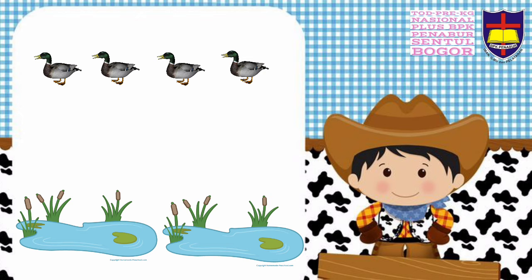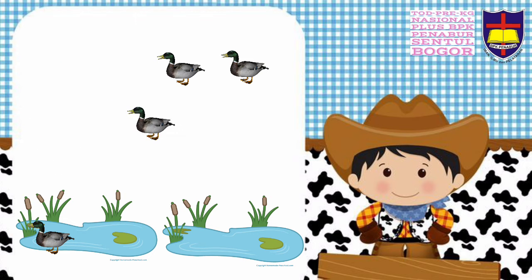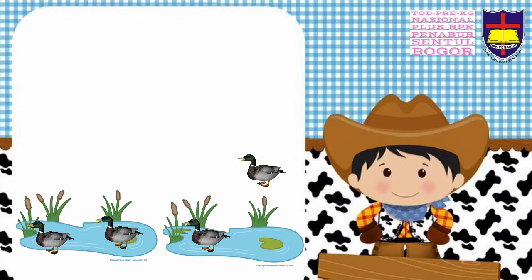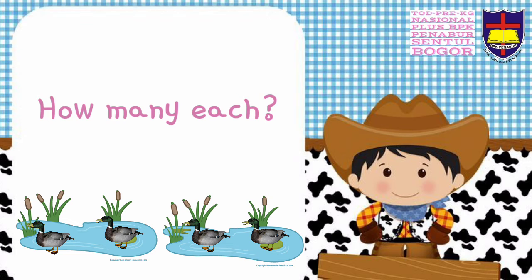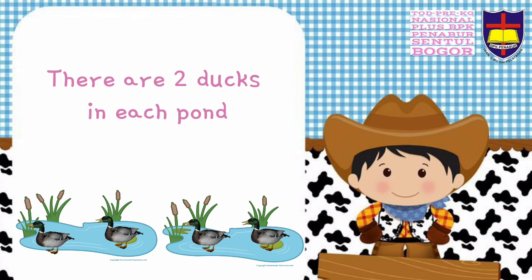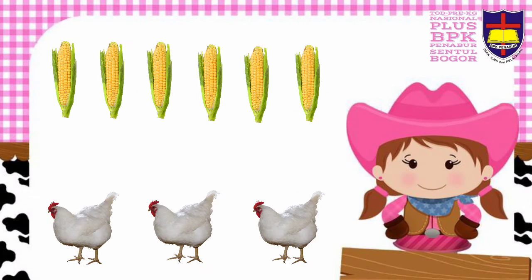Let's see another example. There are four dogs and two ponds. Let's share four dogs between two ponds. Now, how many dogs in each pond? Yes — there are two dogs in each pond.